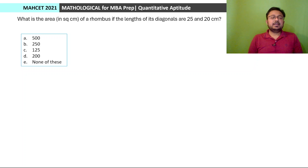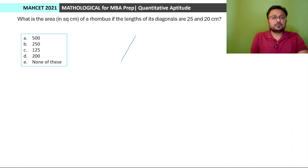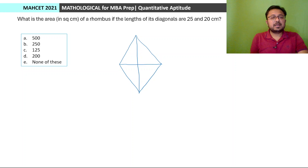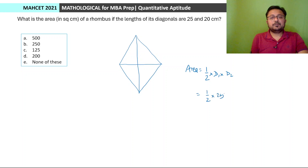Next: What is the area in square centimeters of a rhombus if the lengths of the diagonals are 25 and 20? Area of a rhombus = (1/2) × d1 × d2 = (1/2) × 25 × 20 = 250 square centimeters. Option B.